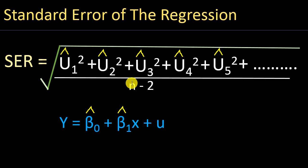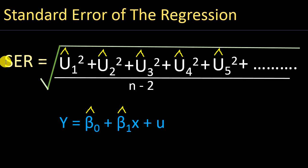The important thing to remember is that a higher standard error of regression means your regression line is not a good estimate, while a small standard error means your regression line is quite good. If you have two regression models to compare based solely on the standard error of regression, you should choose the model with the lowest standard error. We will also discuss R-squared in a different video, which complements this as a measure for choosing the best linear regression model.